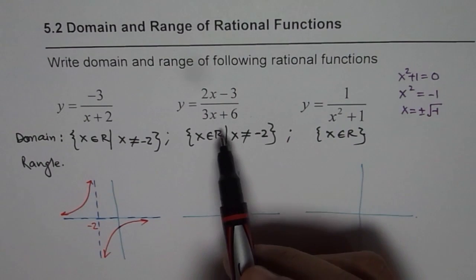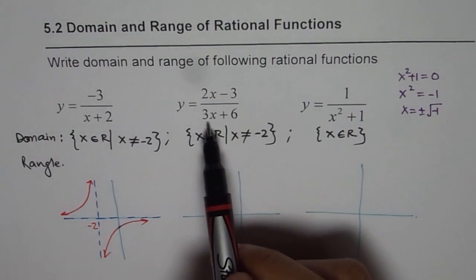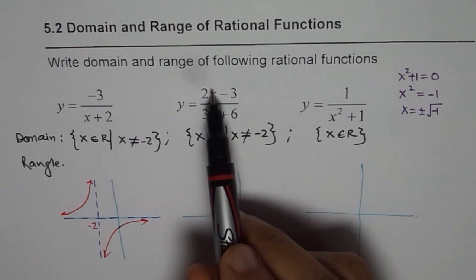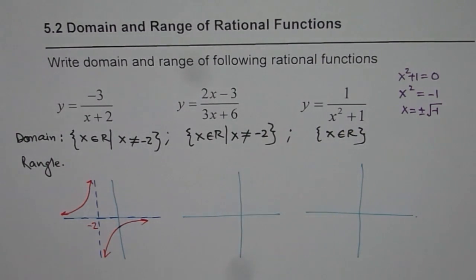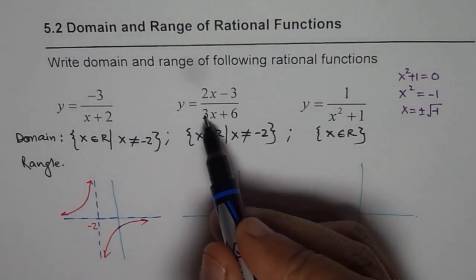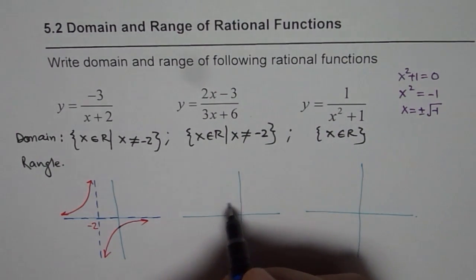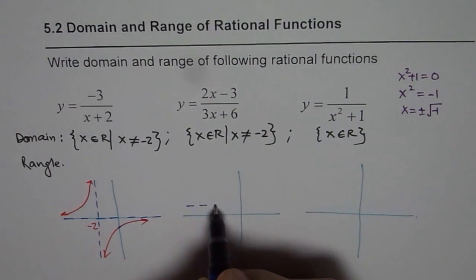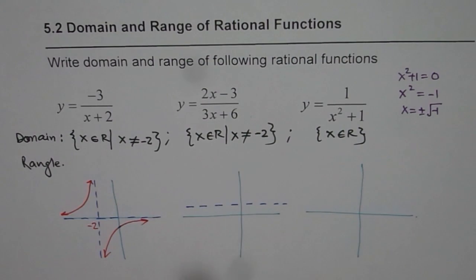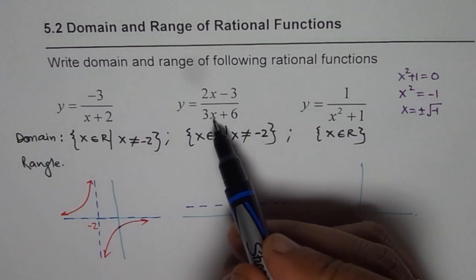Now, next one is 2x minus 3 divided by 3x plus 6. In this case, we know horizontal asymptote should be what? Horizontal asymptote is the ratio of these two, right? 2 over 3. So 2 over 3 is less than 1 anyway. So I will draw a horizontal asymptote like this. Let's say this is our horizontal asymptote.